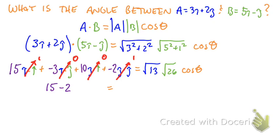And then we evaluate: square root of 13 is 3.6, square root of 26 is 5.1, and we have our cosine theta term. So we get 13 equals 18.36 cosine theta.